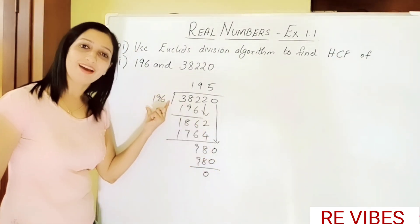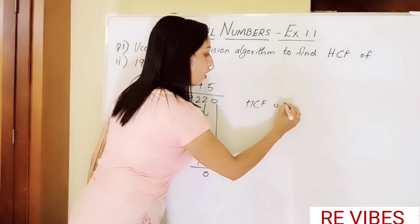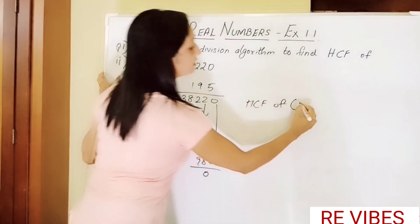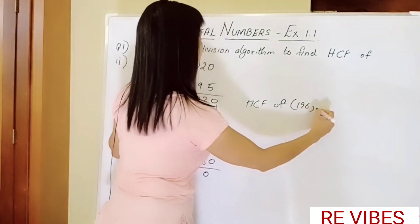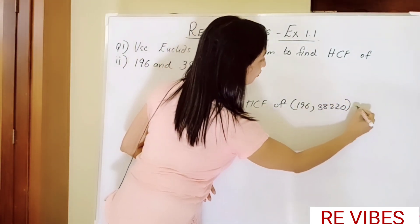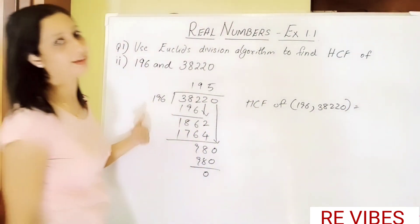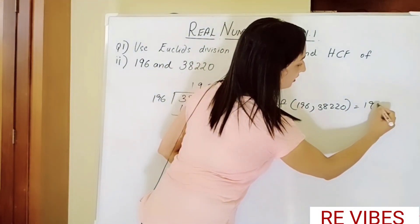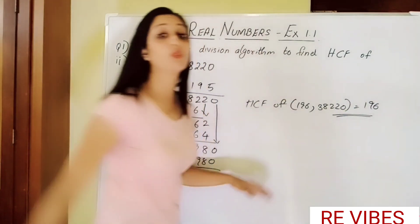So here we have got the remainder 0, then the divisor will be our HCF. So HCF of 196 and 38220 is 196. So this is our second answer.